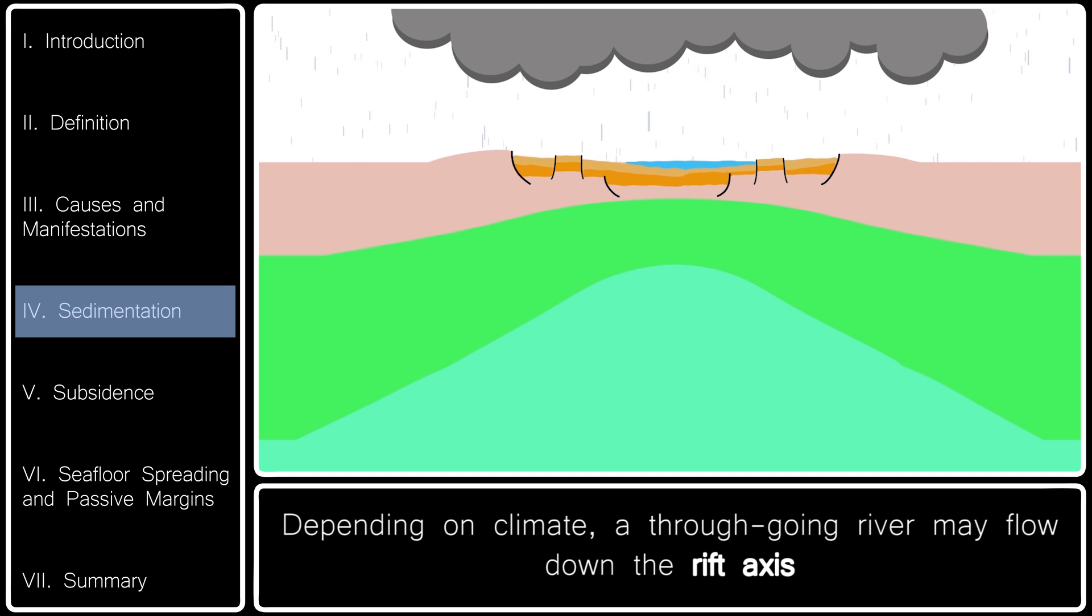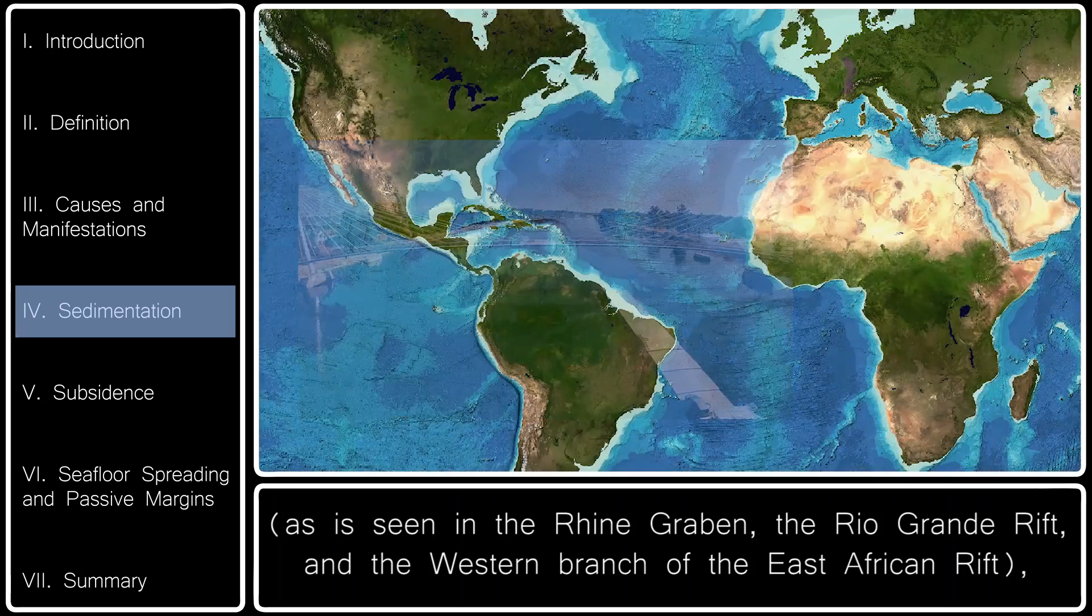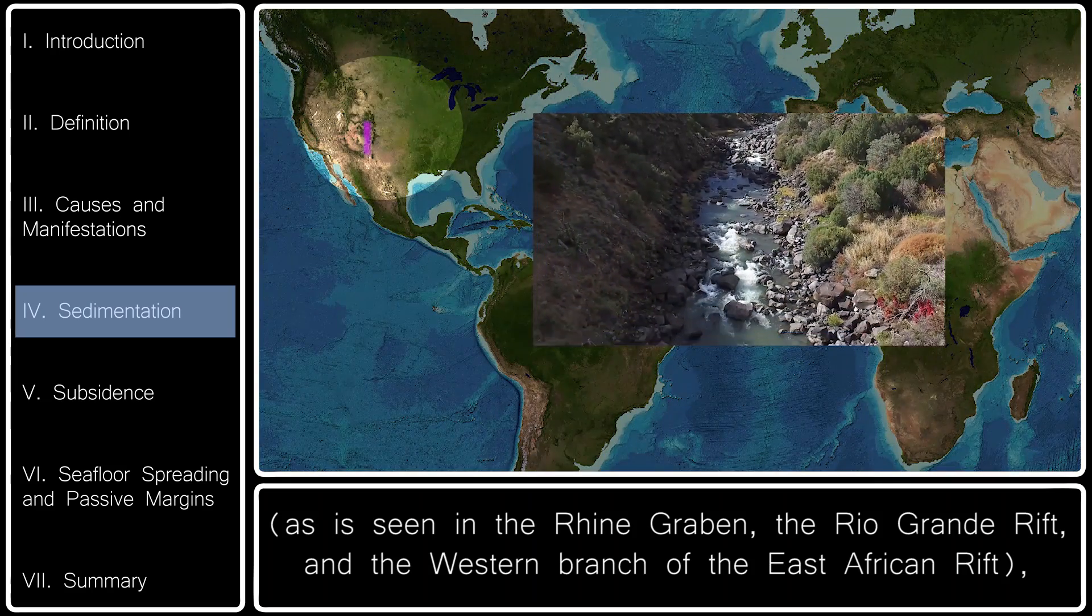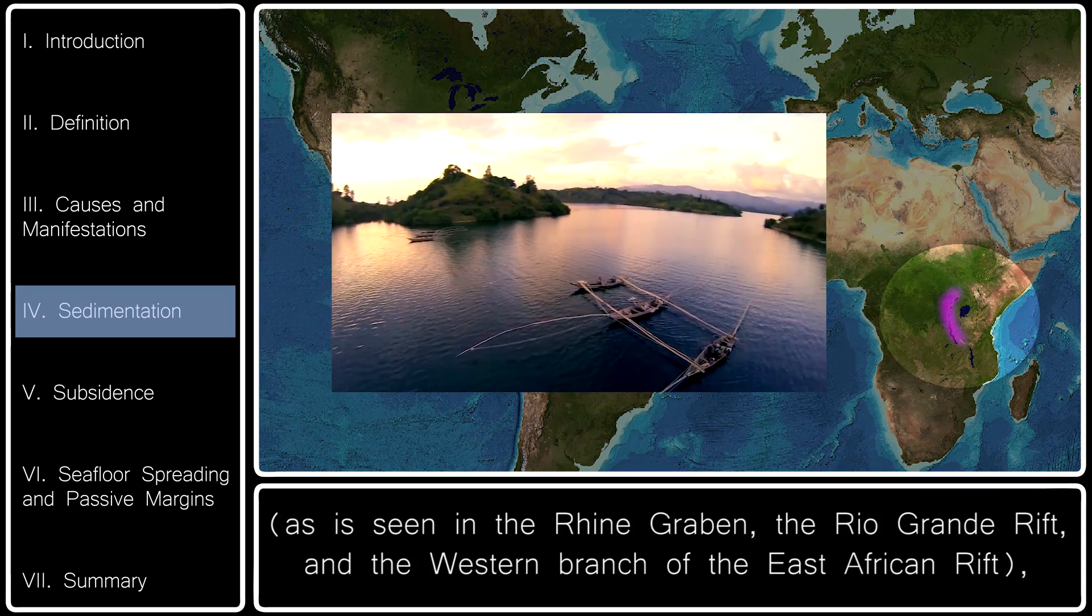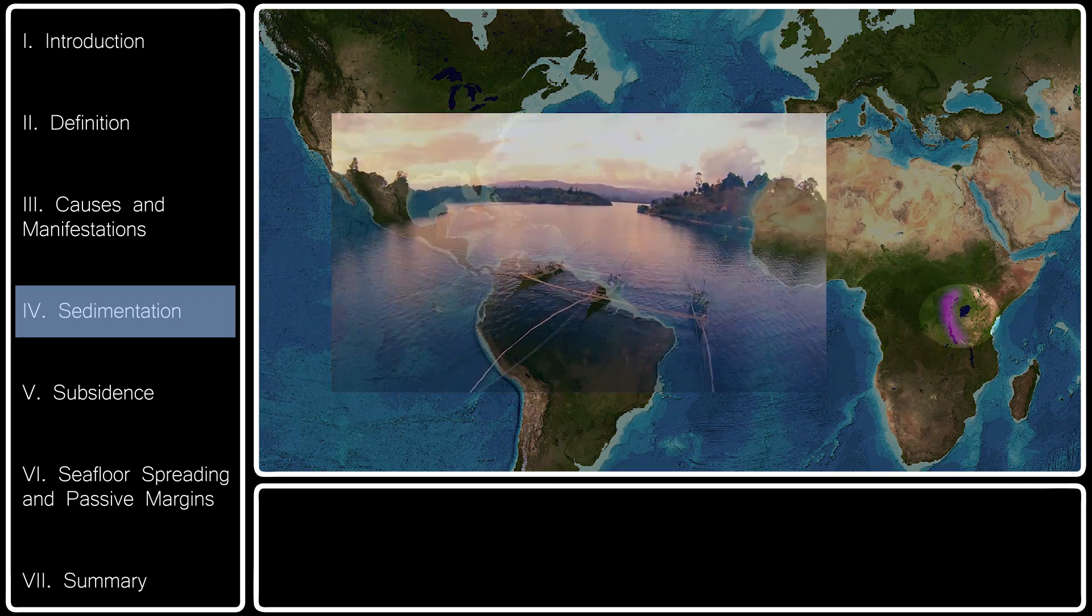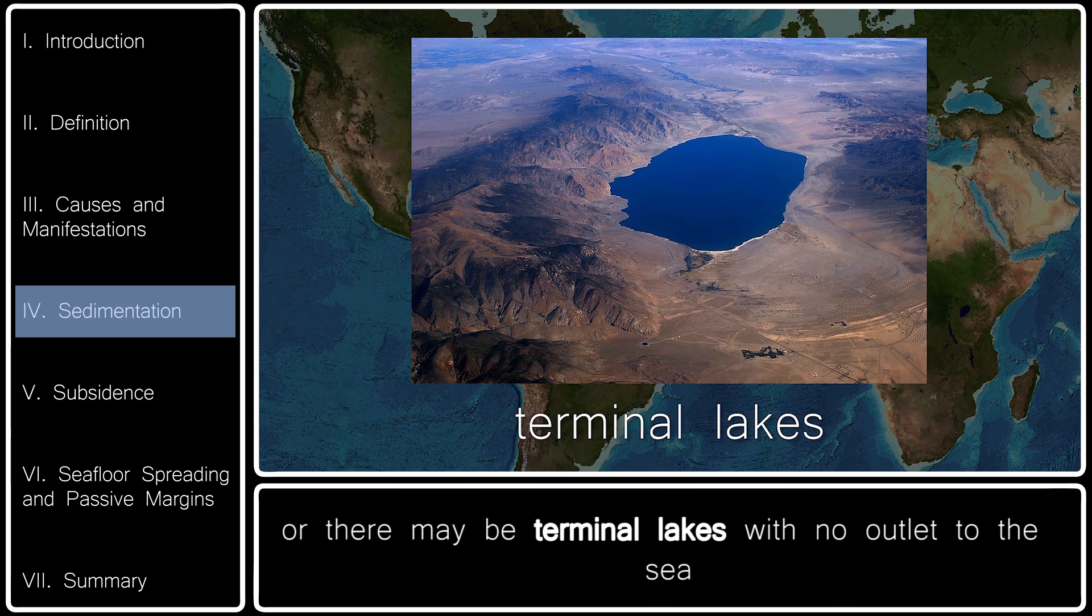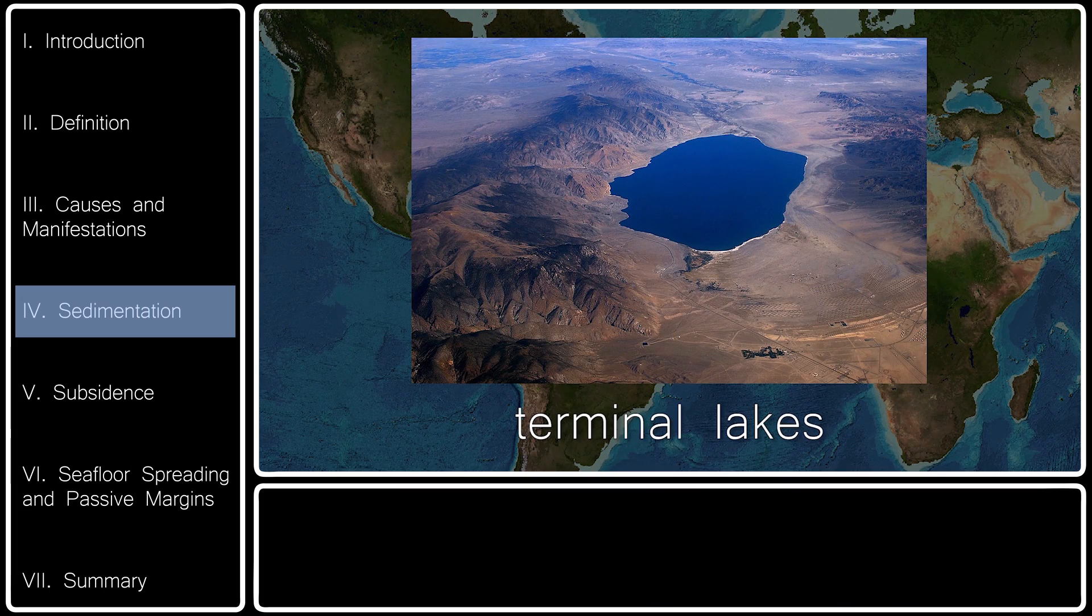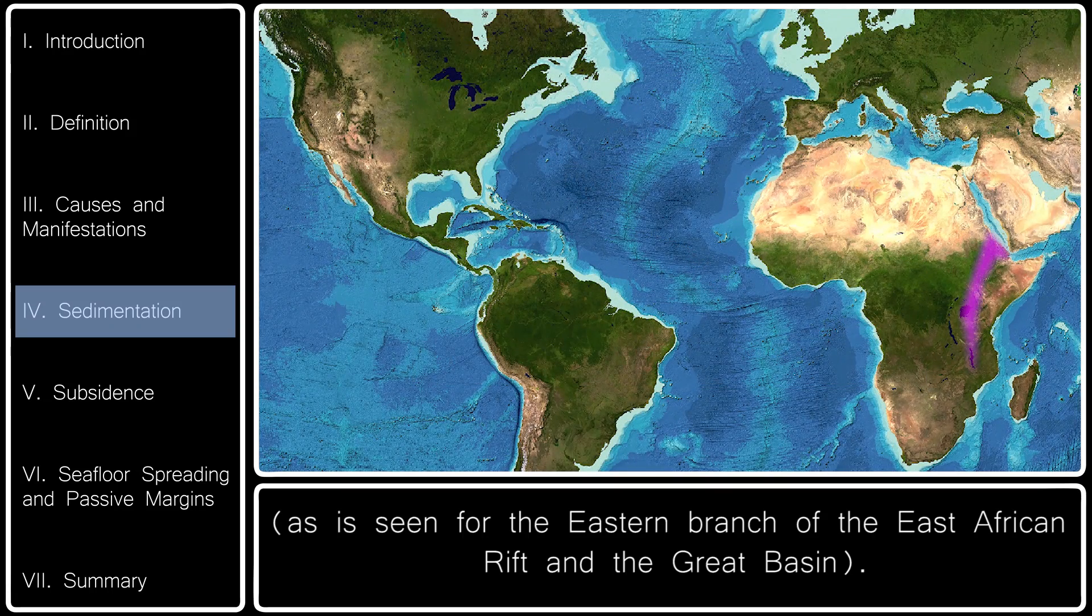Depending on climate, a through-going river may flow down the rift axis, as is seen for the Rhine Graben, the Rio Grande Rift, and the western branch of the East African Rift. Or there may be terminal lakes with no outlet to the sea, as is seen for the eastern branch of the East African Rift and the Great Basin.